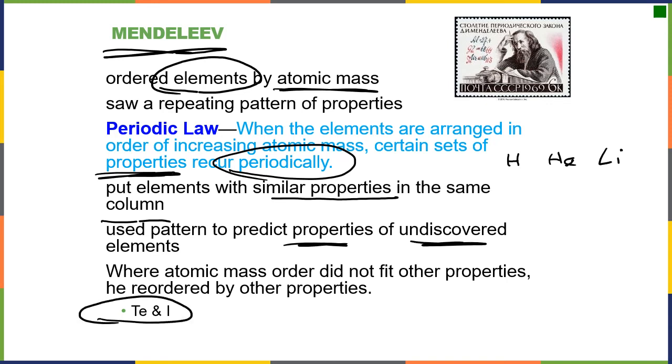And he saw sets of properties that occurred periodically or repeatedly. And when he found those, he put those elements with the similar properties in the same column. And among other things, he used this to help predict the properties of elements that had not yet been discovered. And every now and then he found elements that were in the wrong order in terms of mass. So, for example, Te weighs more than I, they have different properties. So he put iodine below bromine because they have similar properties. And it changed the order out of just a list by masses into a list by properties. Which started, this is in the 1800s, by the way, started our periodic table as we know it today.